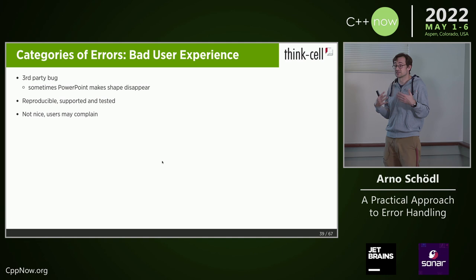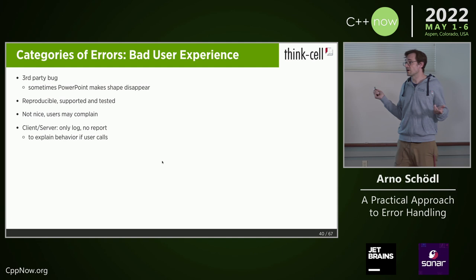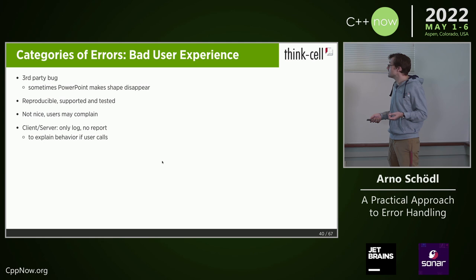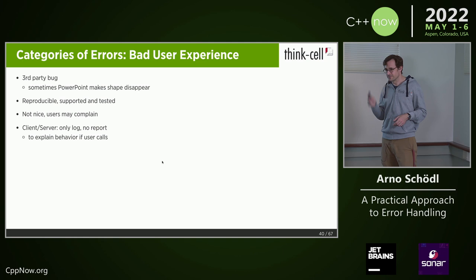That's not always necessary to alert the user if it happens rarely. Alternatively, you can just log — write something into the log file saying the user ran into this particular situation. So when they call and say 'my shape disappeared,' you can tell them: I can see from your log file that you ran into this situation, and we filed this at Microsoft under bug number X.